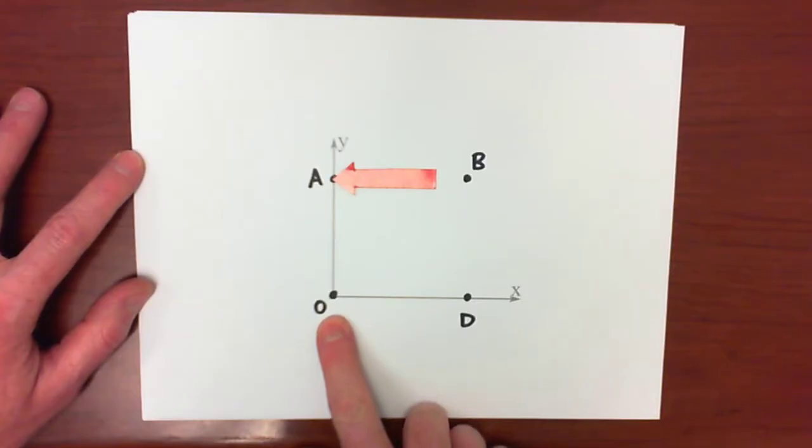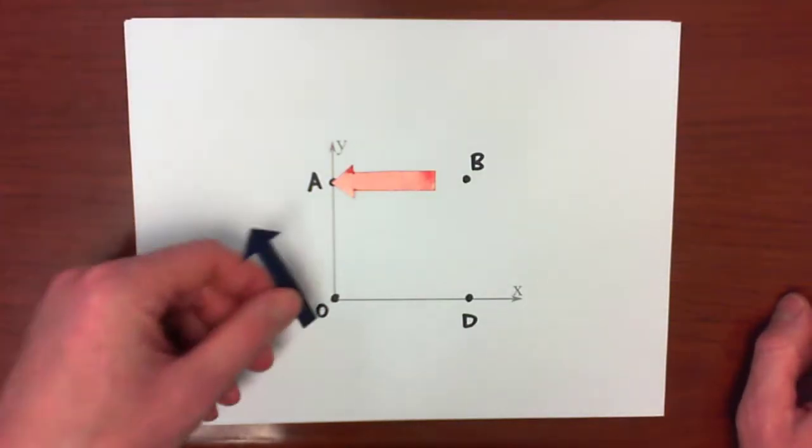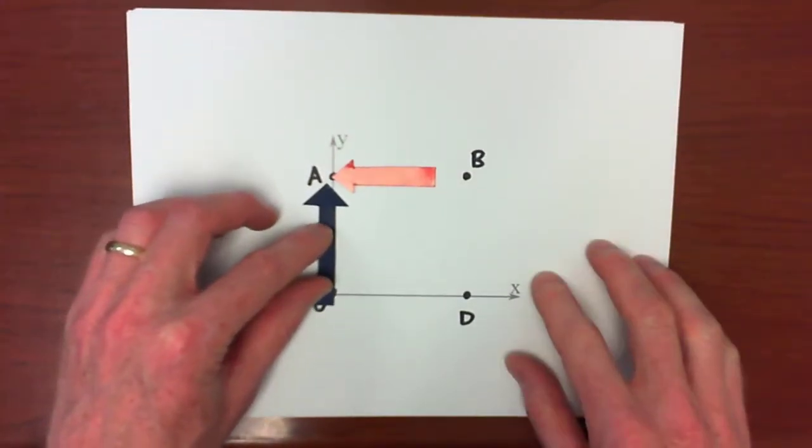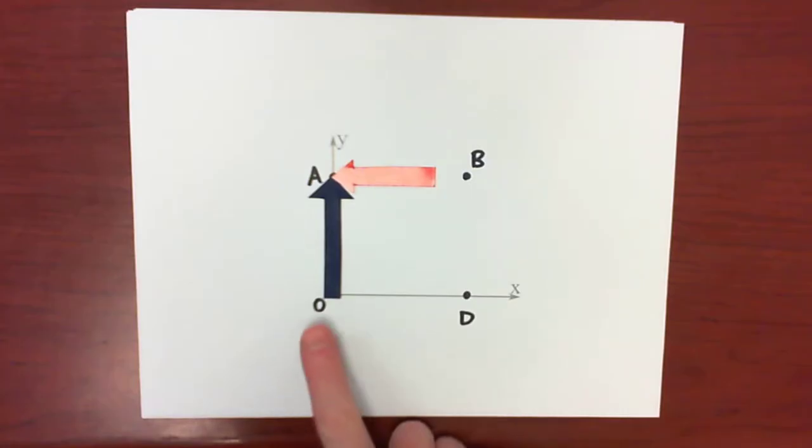So if I want to take my moment around point O, and if we are taking cross products, what good is a force vector without a position vector? We're going to look here at taking the moment around point O. So the blue vector is our position vector R.